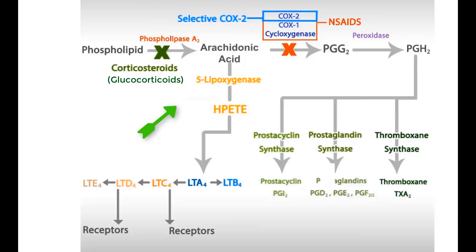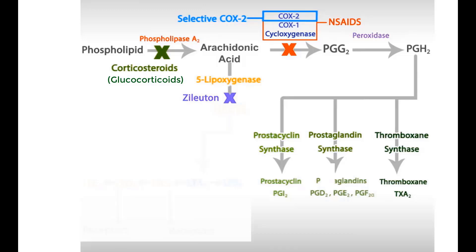Going to leukotriene pathways, you will notice that the drug zileuton interferes with the 5-lipoxygenase enzyme, thus inhibiting the production of all inflammatory leukotrienes.